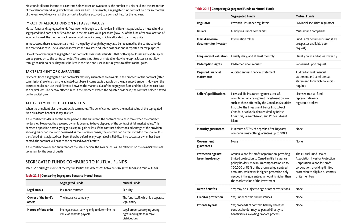There is no government guarantee for either segregated funds or mutual funds. Protection against issuer insolvency: for segregated funds, Assurus — a not-for-profit organization — provides limited protection to Canadian life insurance policyholders, with maximum compensation up to $60,000 or 85% of the promised guaranteed amounts, whichever is higher; for mutual funds, the Mutual Fund Dealer Association Investor Protection Corporation provides limited protection to eligible customers. Death benefits: for segregated funds, yes, may be subject to age or other restrictions; mutual funds have no death benefits. Creditor protection: for segregated funds, yes, under certain circumstances; for mutual funds, none. Probate bypass: for segregated funds, yes — proceeds of a contract held by a deceased contract holder may be passed directly to beneficiaries, avoiding the probate process; for mutual funds, none.